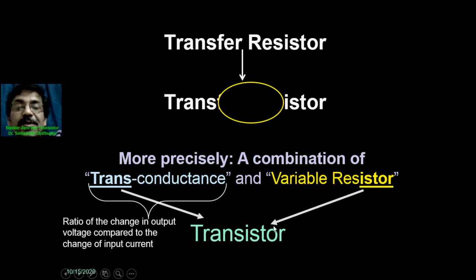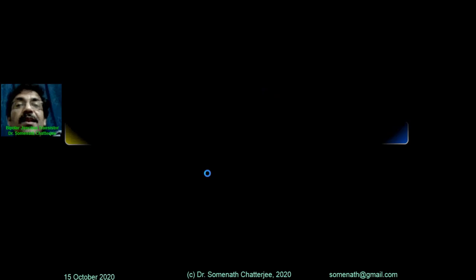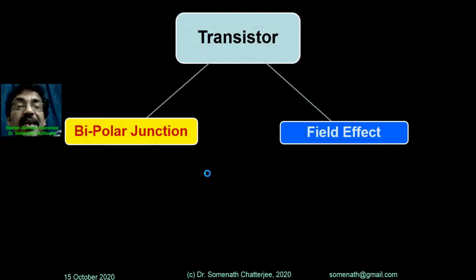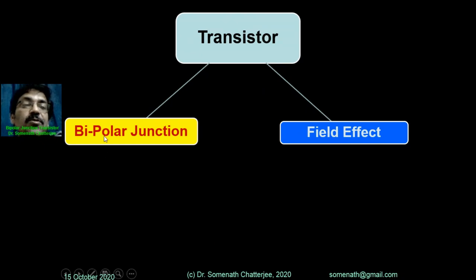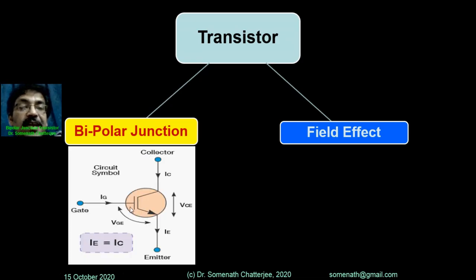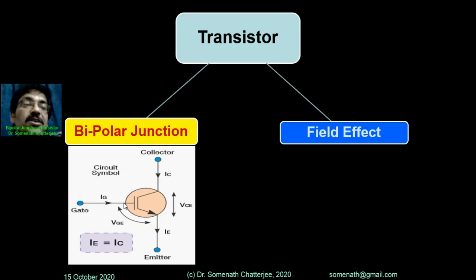It is clear why the transistor name came. Here we will give the essence of the types of transistors. One is the bipolar junction transistor — 'bi' means two — where both majority and minority carriers are responsible for the conduction mechanism. That is the bipolar junction transistor, and today's discussion is focused on it.